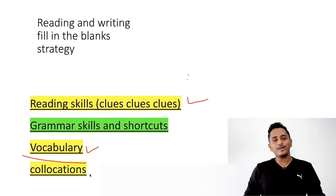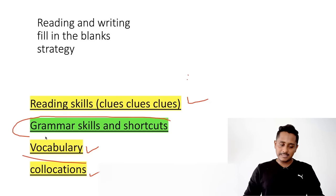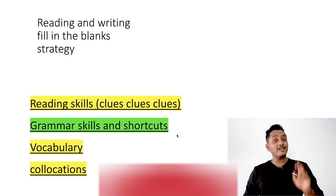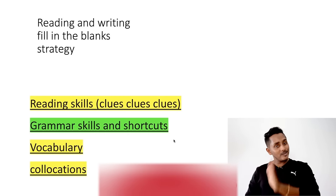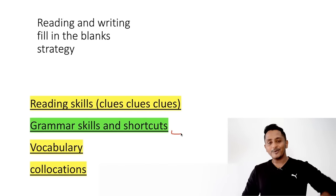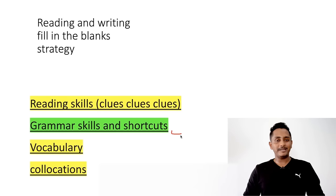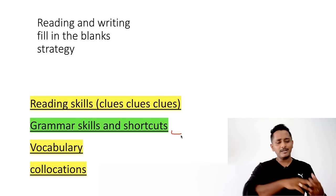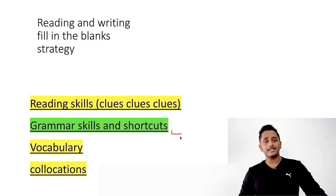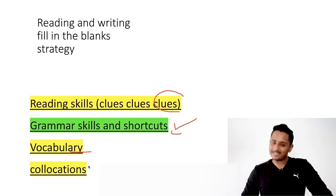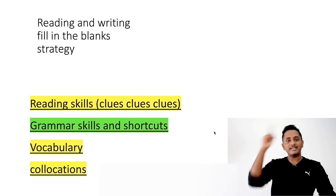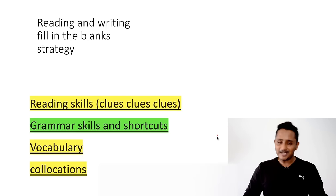Collocations also play a very important role and we'll talk about many today. Third is grammar skills — tenses, subject-verb agreement, active voice and passive voice: 'he is killed' versus 'he was killed' versus 'he killed.' In our course grammar alone is around 20 hours. Today we'll start with grammar shortcuts, then collocations, vocabulary, and finish with a test.